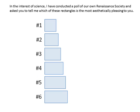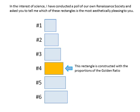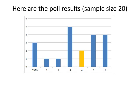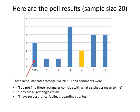Well, in the interest of science, I have conducted a poll of our own Renaissance Society and asked you to tell me which of these rectangles is the most aesthetically pleasing to you. Rectangle number four is the one constructed with the proportions of the golden ratio. So which one did you choose? Well, here were the poll results. We had a sample group of 20. It turns out that three Renaissance-ateers chose none — they couldn't find any reason to select an aesthetically pleasing rectangle. And their comments were: 'I do not find these rectangles coincide with what aesthetics mean to me.' 'They are all rectangles to me.' And 'I have no aesthetical feelings regarding your test.'